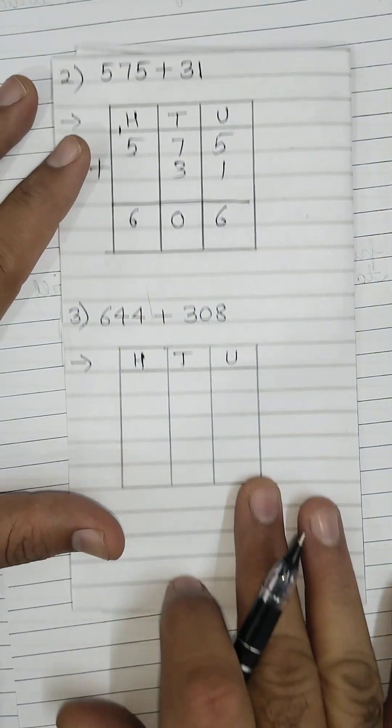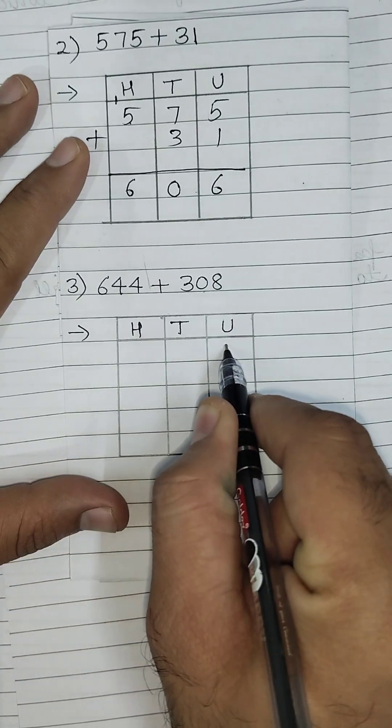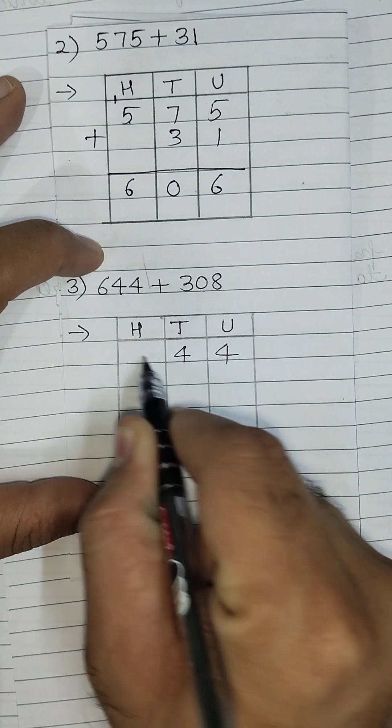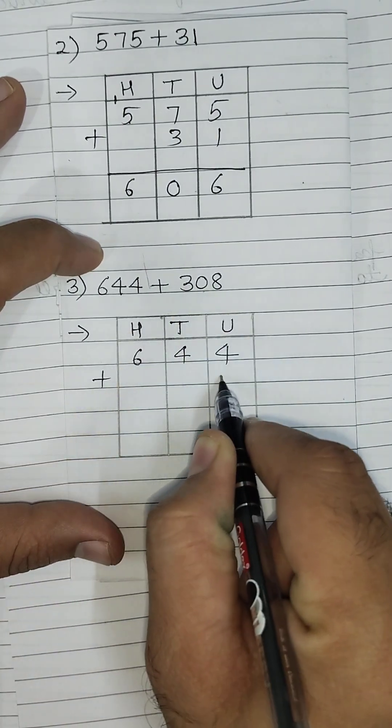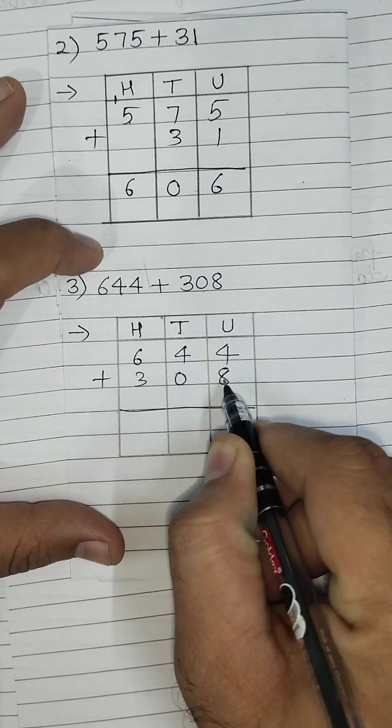Next addition is 644 plus 308. So first of all we will write from the unit place: 4, 4, and 6. Then plus sign, plus 308: 8, 0, 3. Now we will add 4 plus 8, this will be 12.